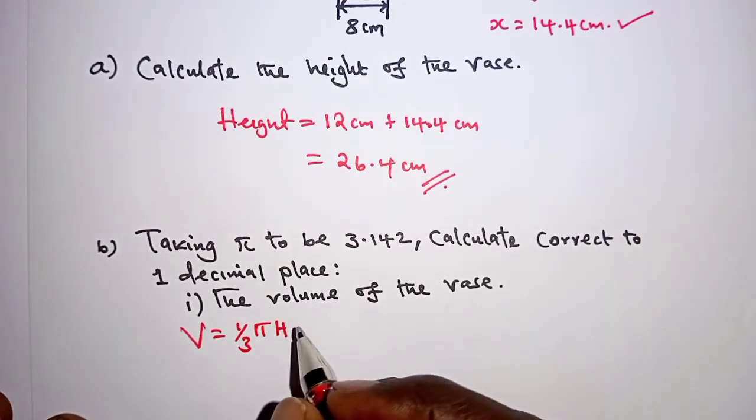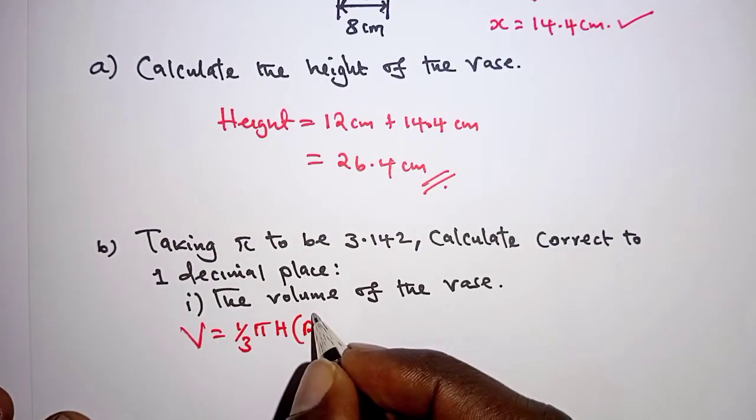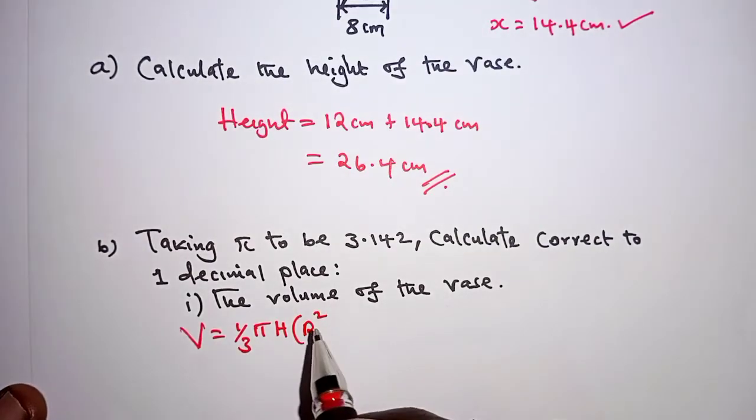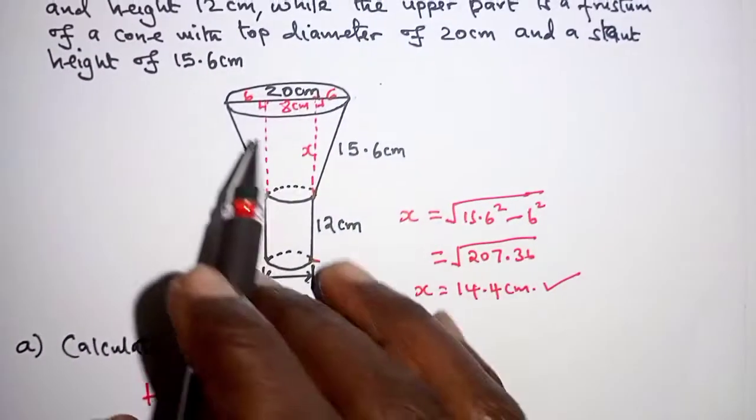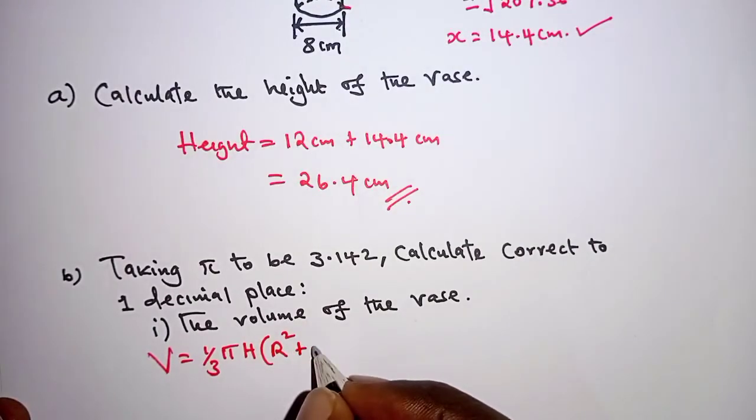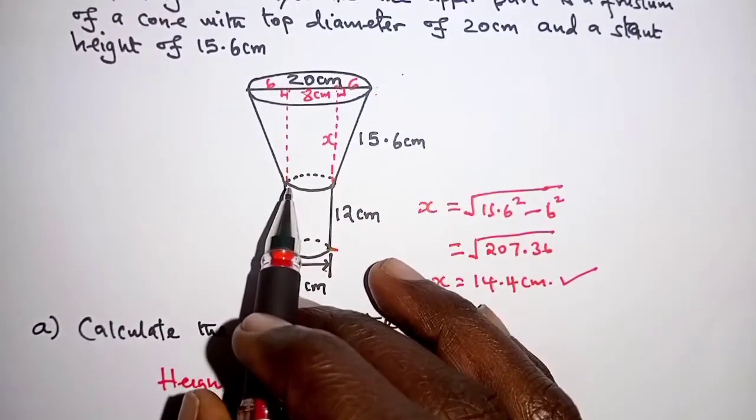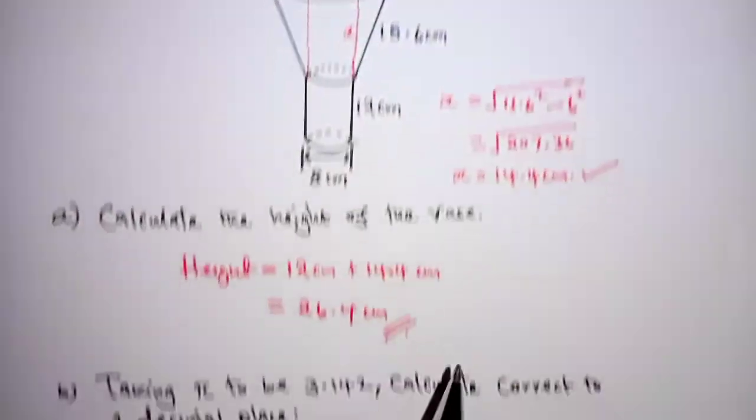of the frustum, into r squared, where r is the radius of the upper part, that is the bigger radius, plus r squared, plus r squared, and this other r is for the lower part, that is the smaller part.